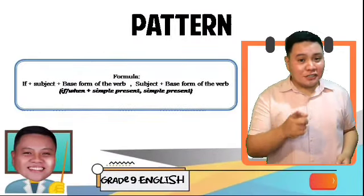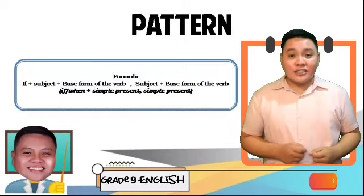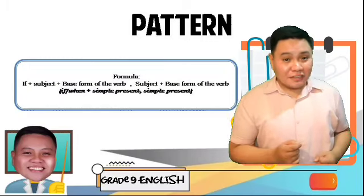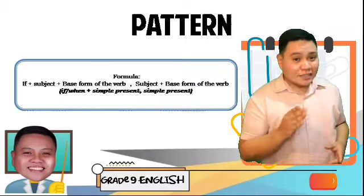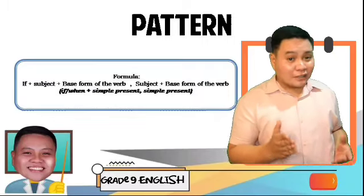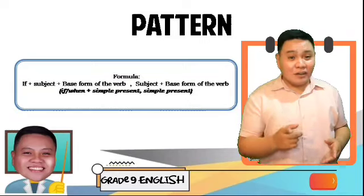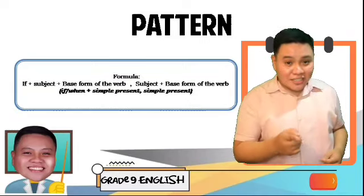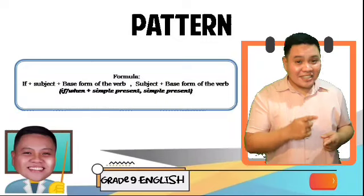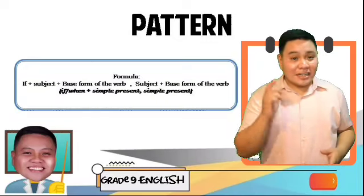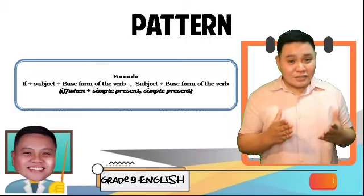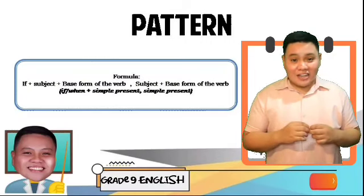In order to create a sentence using zero conditional, do not forget this pattern: If or when + subject + verb in base form + comma + subject + verb in base form. Or the simplest way: subordinate clause + comma + simple present tense. Think of an if clause and think of the result that is expected to happen. That's the formula for creating a sentence using zero conditional. Zero conditional is used for general truth, habitual action, and a lot more.